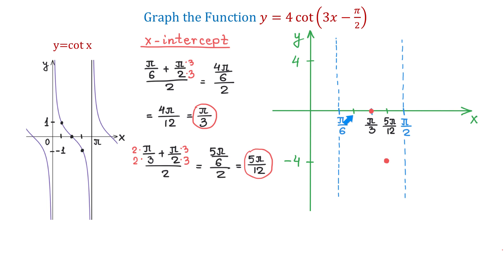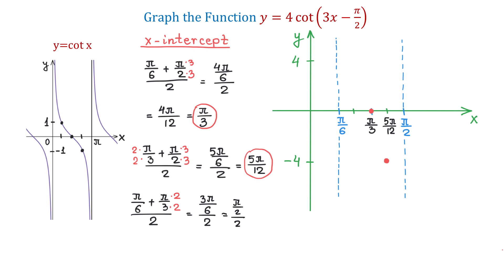To find the x-coordinate of the point to the left, we will add pi over 6 and pi over 3 and divide the result by 2. Multiplying the numerator and denominator of the second fraction by 2, we get pi over 6 plus 2 pi over 6, which makes 3 pi over 6. Now 3 pi over 6 is the same as pi over 2, and pi over 2 divided by 2 equals pi over 4. So this point has x-coordinate pi over 4. Let's plot the point pi over 4 and positive 4.